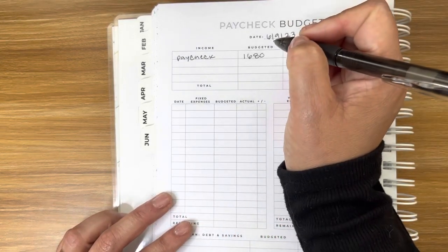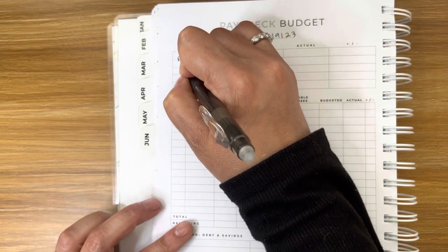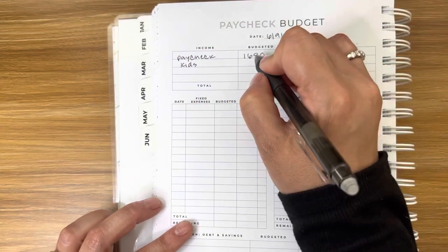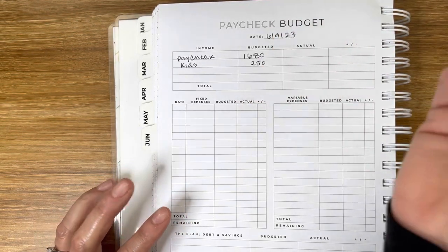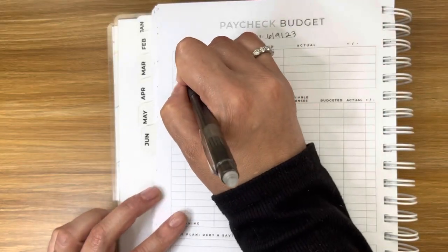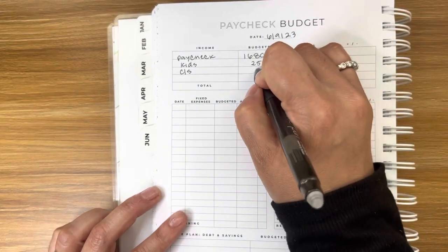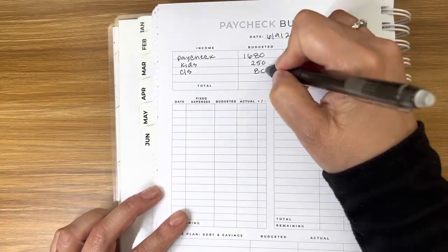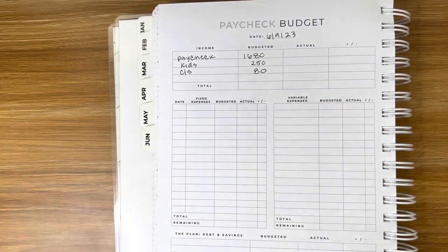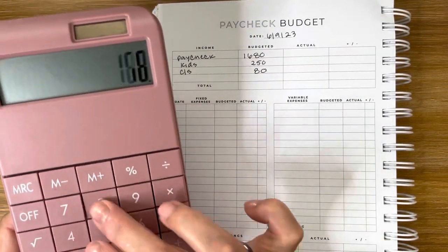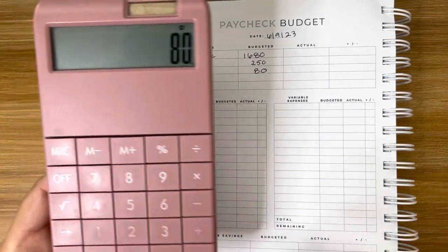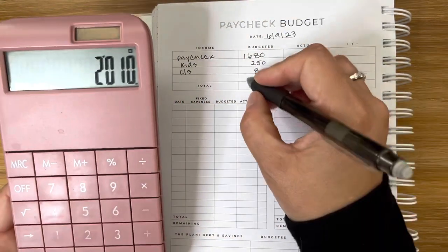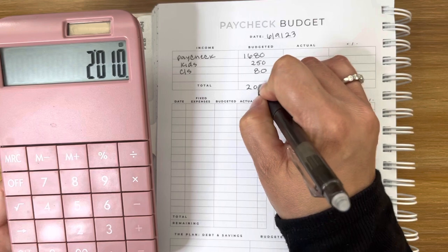And then we have my kids. They help out with $2.50, and then I started to get child support again. Child support, I only got $80. So hopefully that continues. Let's add that up. $1,680, $2.50, and $80. The total is $2,010.